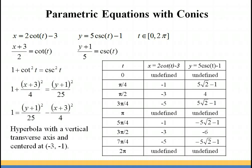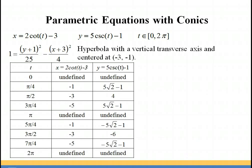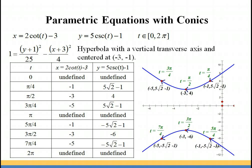At t equals π/4, cotangent equals 1, so x equals 2 times 1 minus 3, which is negative 1. For the cosecant at π/4 you get the square root of 2, so y equals square root of 2 minus 1. You can work through the other values similarly. The result is a hyperbola with a vertical transverse axis centered at (−3, −1). It's much easier to graph after the parameter has been eliminated in terms of x and y only, but always go back to the original ordered pairs to get your t values and mark the direction of the graph.